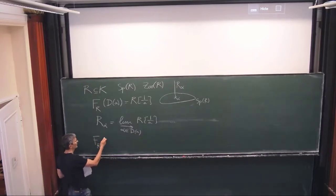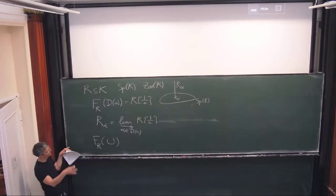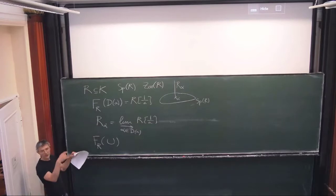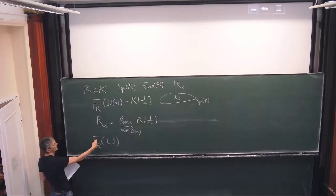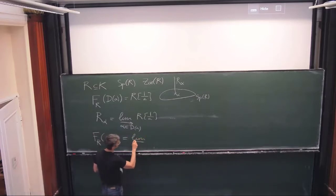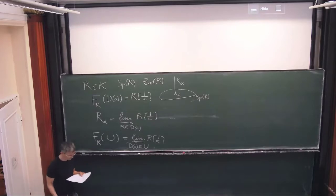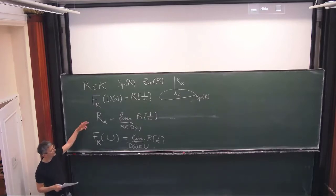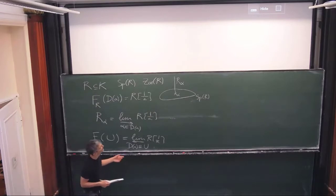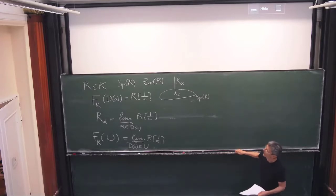This sheaf is only defined on basic opens, but if you want to define it on any open U — an open is given by a union of D(a)'s — then F(U) is defined as a projective limit of F(D(a)) for D(a) inside U. That's the classical definition, and in this way it's symmetric between U and alpha. So you have a complete definition of F_R as a sheaf.